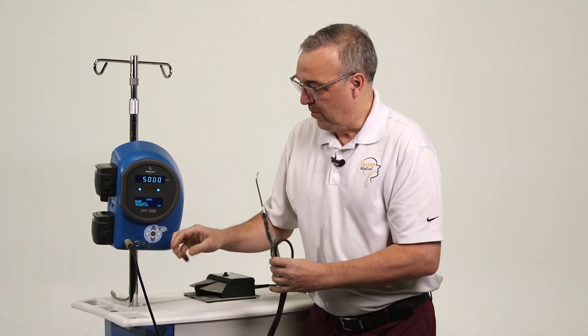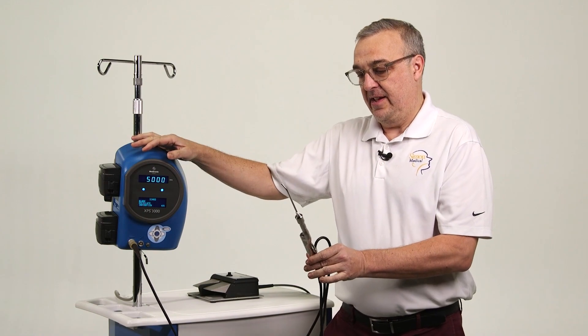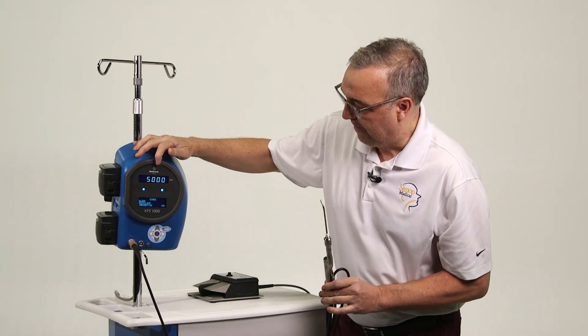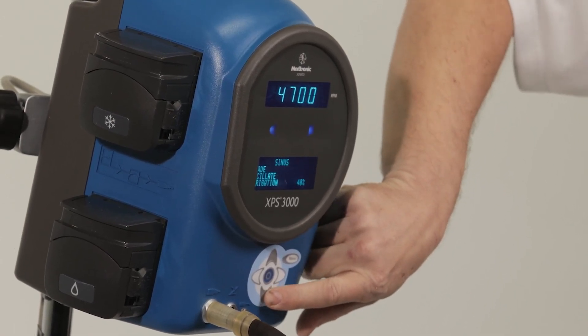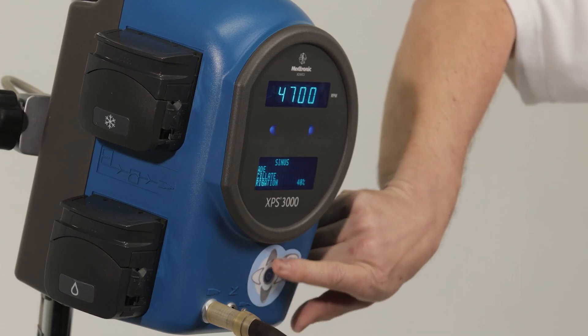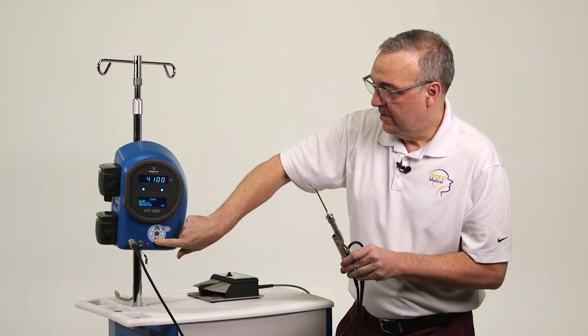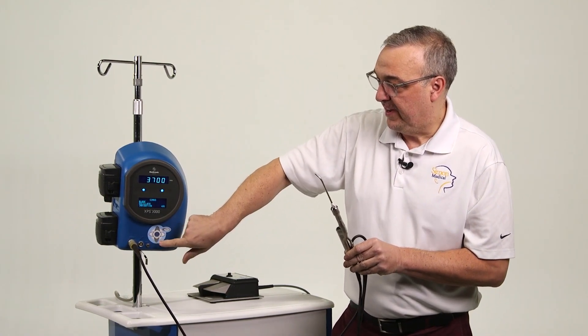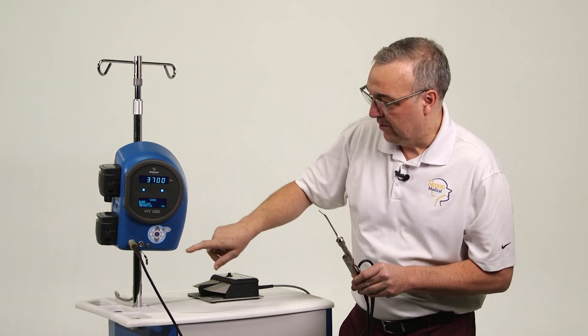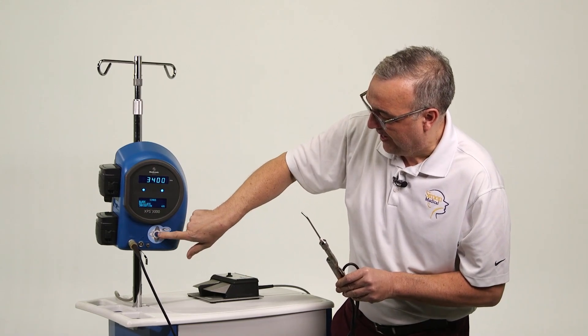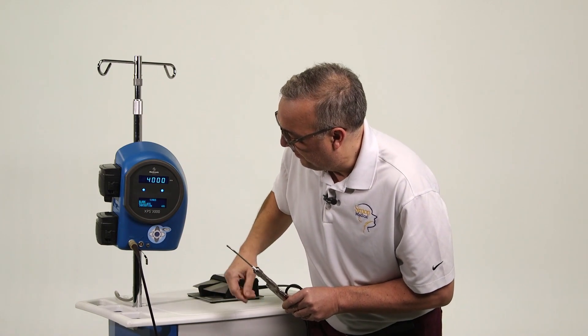Now when we're plugged in, it will go to the default settings. So the default settings with the M2 microdebreeder are 5000 oscillate. If you want to turn that down, we can simply do that manually with the up and down arrow. So if your surgeon wants to use 3000 because some will, if they used the older boxes, the max speed was 3000. So some may be more comfortable at 3000. So you can simply adjust that manually with your fingers, take it back up to 5000, and it's in oscillate.